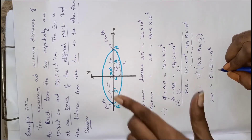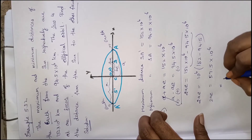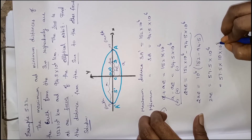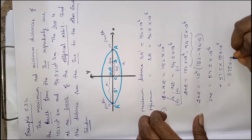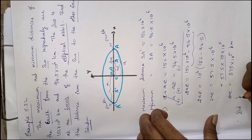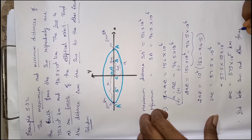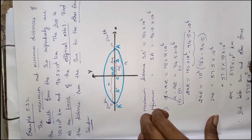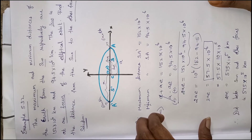So 2ae, the distance between the two foci, is 57.5 into 10 power 6 kilometer. Writing this as 575 into 10 power 5 kilometer. Therefore the distance between the sun and the other focus is 575 into 10 power 5 kilometer. That's all about this question, children. Thank you.